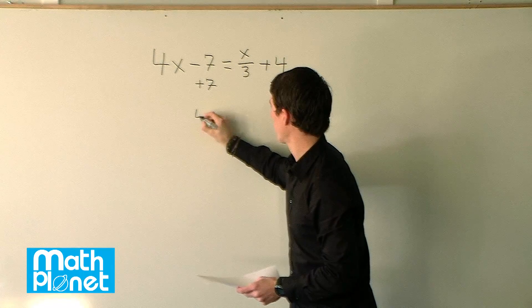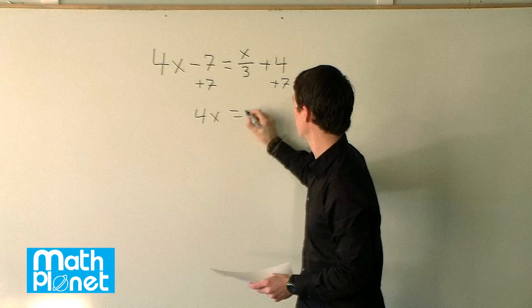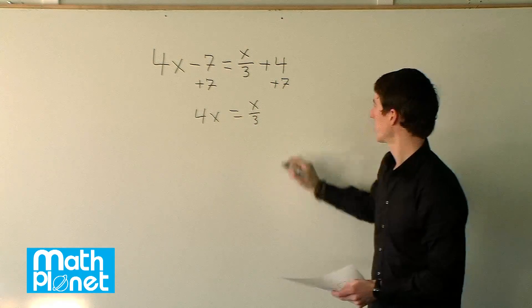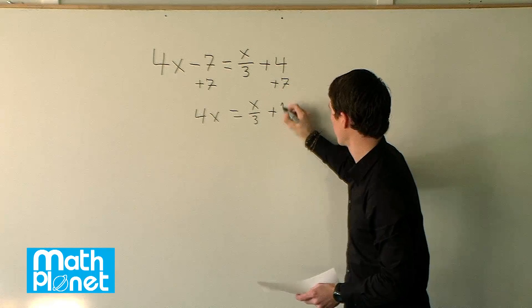Then we have 4x equals x over 3, and then we have 4 plus 7 here. So that's just 11, so we have plus 11.